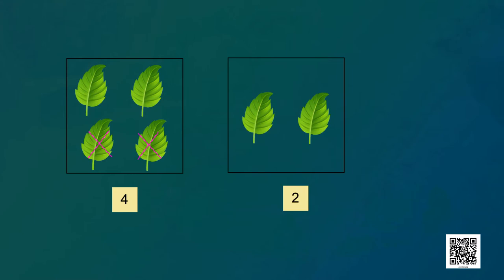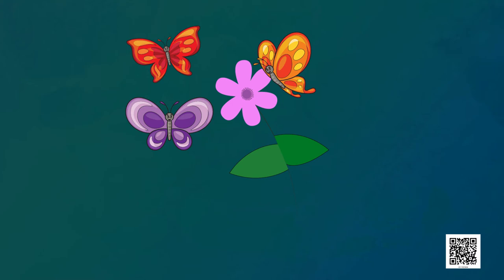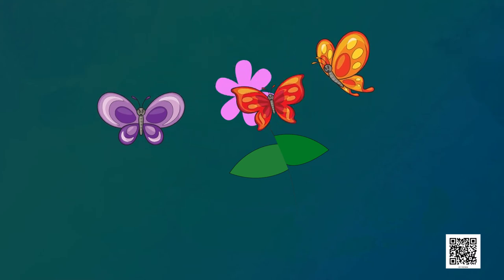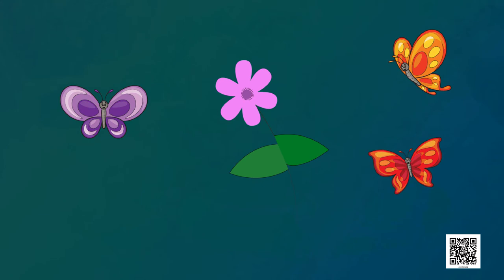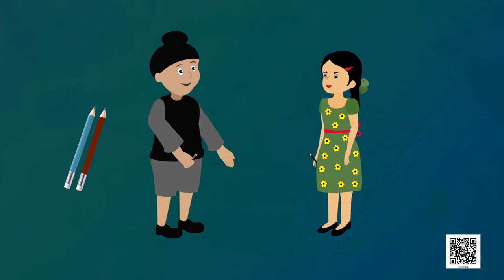Here we have four leaves and two leaves have been taken away, so now there are two leaves. There are three butterflies on this flower — all three have gone away, so now there is no butterfly left. Three minus three is equal to zero. Sonu has three pencils and he gave one pencil to Preeti — on counting the remaining pencils we get two. Three minus one is equal to two.